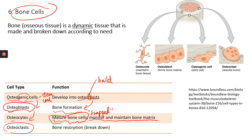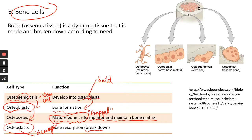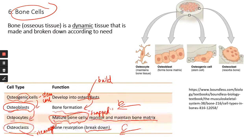The last bone cell type is osteoclasts — 'C' for cleavage. Osteoclasts are involved in bone resorption; basically they break down bone matrix so that you can rebuild. So remember: osteoblasts, 'B' for building bone matrix, and on the other hand, osteoclasts — cleavage — break down bone matrix.